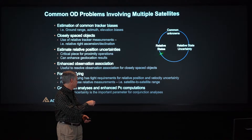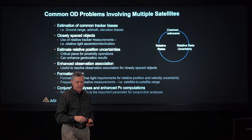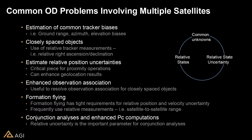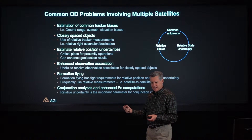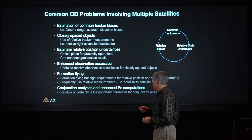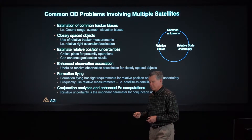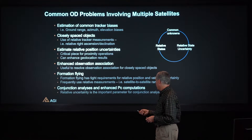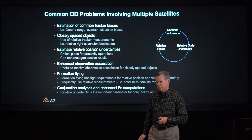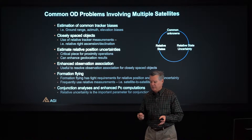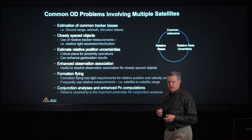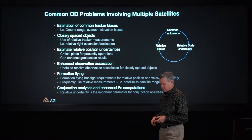If you're interested in the relative states of the spacecraft, you're also interested in relative state uncertainty. Looking at the variety of applications on the chart, many are most interested in the uncertainty. For proximity operations, we're interested in how close things are and where they are relative to each other, and we're also concerned about collision avoidance. Computing conjunction probability — the probability of a collision during a conjunction — is extremely sensitive to having proper uncertainty between the two objects.